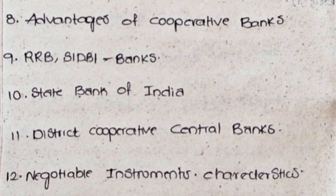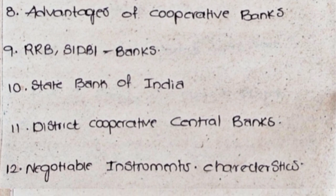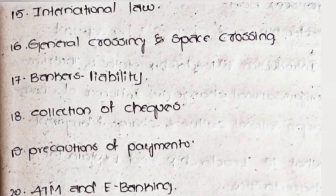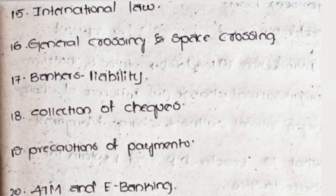Twelfth, Negotiable Instruments Characteristics. Thirteenth, Payments in Due Course. Fourteenth, Types of Loans. Fifteenth, International Law. Sixteenth, General Crossing and Special Crossing.